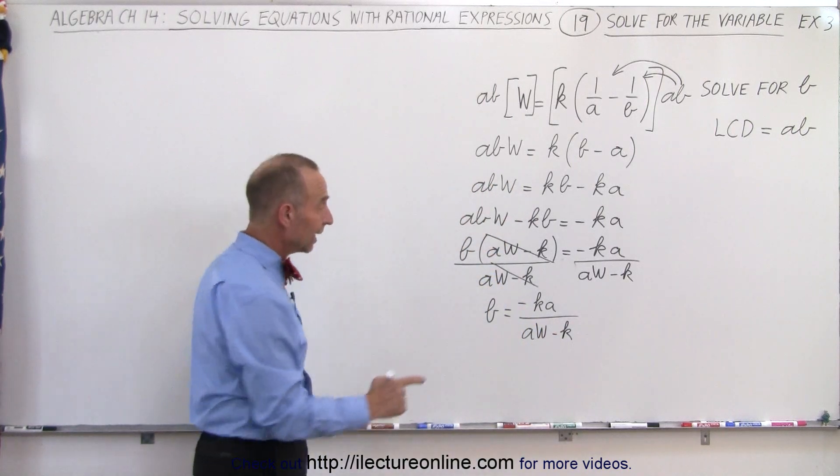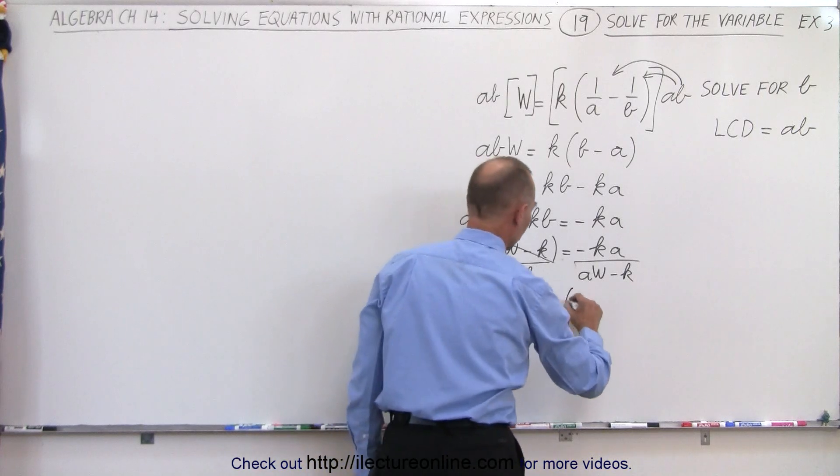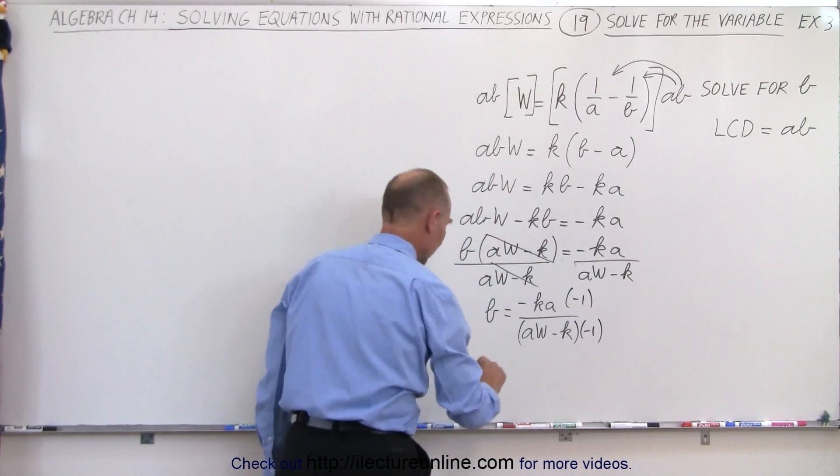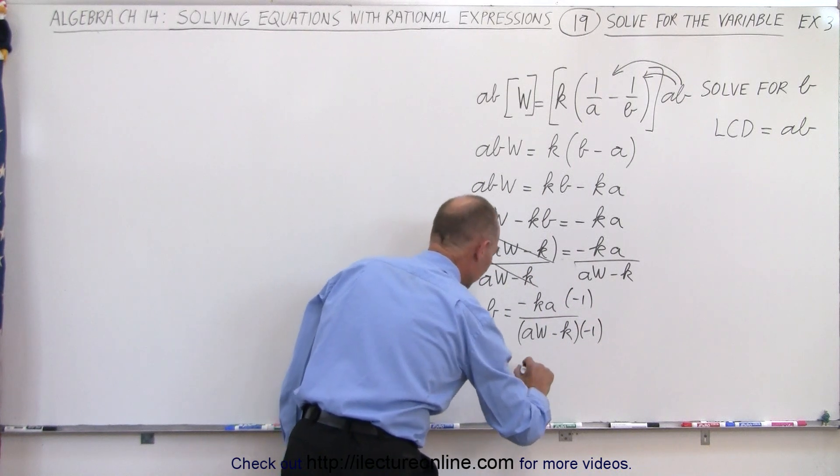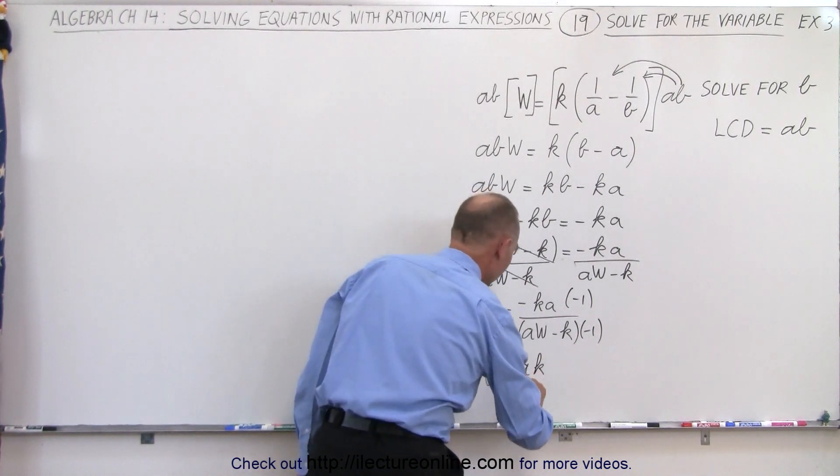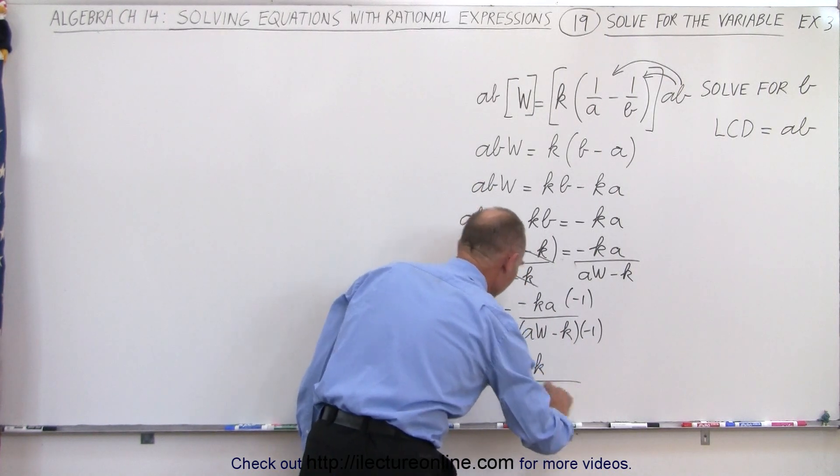Now you may not like that negative there, I don't like it, so I'm going to multiply both the top and the bottom, the numerator and the denominator by a negative 1. That means that b is therefore equal to ak, because I like to write a before k, divided by, flip this around, k minus aw.